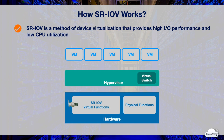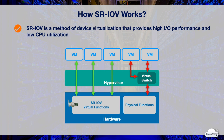Here's how SR-IOV works at a high level. In a typical virtual environment, there is a hypervisor running on top of the hardware. The hypervisor creates and runs the VMs, and manages networking and security by providing a virtual switch between VMs and physical functions on the hardware. Because the hypervisor needs to perform resource sharing on behalf of the VMs, this often results in poor I/O performance. SR-IOV improves I/O performance by providing device virtualization with virtual functions on the hardware, allowing VMs to bypass the hypervisor and talk to the hardware directly, resulting in much higher performance.